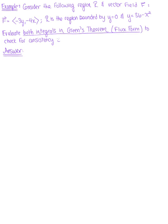Consider the following region R and vector field. We are given the vector field F defined by the components (-3y, -4x), and R is the region bounded by y equals 0 and y equals 36 minus x squared. We're asked to evaluate both integrals in the flux form of Green's theorem to check for consistency.